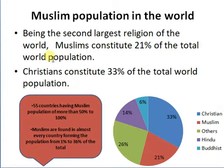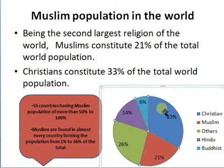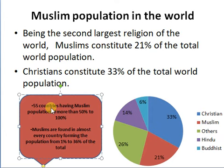Muslims being the second largest religion of the world constitute 21% of the total population. Christianity is on top, with Christians constituting 33% of the total world population. Islam is the second largest, with Muslims forming 21% of the world. There are 55 countries in the world which have more than 50% of their population as Muslims, but they are not Muslim countries because they have not declared themselves as Muslim countries.